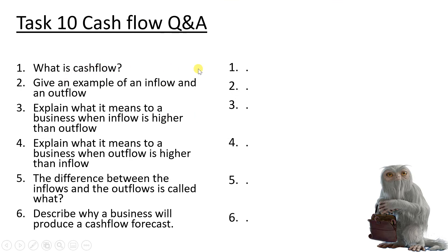Task ten: cash flow Q&A. Question one: what is cash flow? Question two: give an example of an inflow and an outflow. Question three: explain what it means when an inflow is higher than an outflow. Question four: explain what it means when an outflow is higher than an inflow. Question five: what is the difference between inflows and outflows called? Question six: describe why a business will produce a cash flow forecast. Six questions to summarise your second lesson on cash flow.